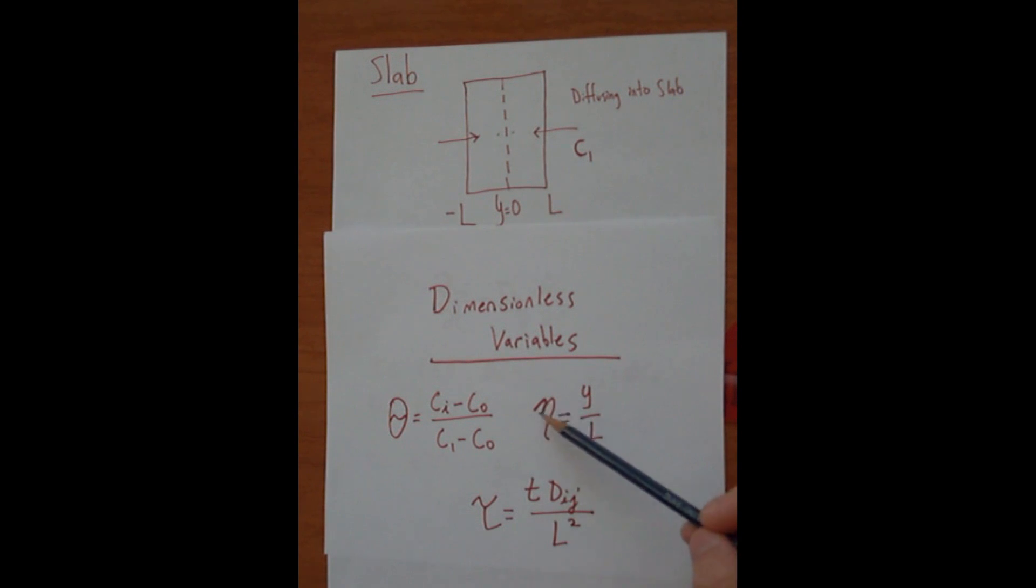The dimensionless position is shown by eta, and that is Y divided by the half thickness L.